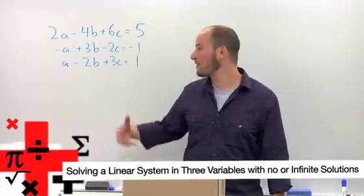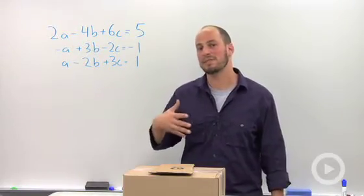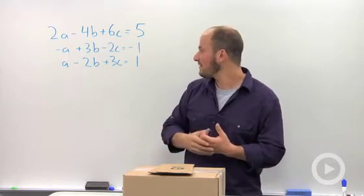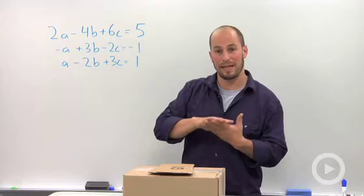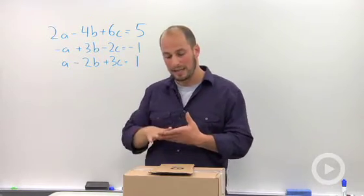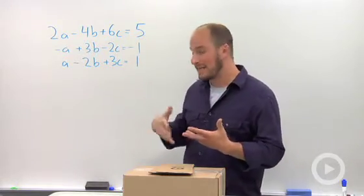Solving a system in three variables. Whenever we're dealing with an equation with three variables, that means we're dealing with an extra dimension. In this case, everything is a first degree, so we are dealing with a plane. So what we actually have here is three planes, and we need to figure out how three planes can intersect.